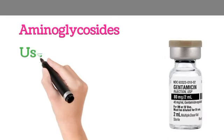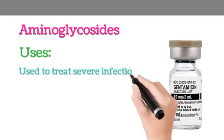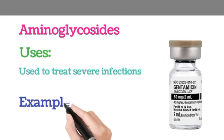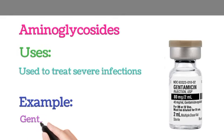Aminoglycosides — uses. Aminoglycosides are used to treat severe infections. An example is gentamicin.